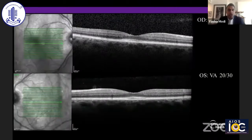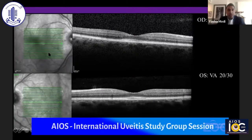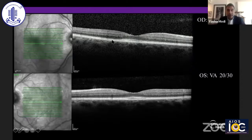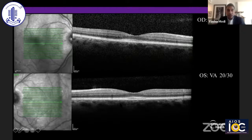When she comes to see us, she has this shadowing appearance on the near infrared reflectance, which almost looks like floaters and corresponds to her vitreitis. And then on the OCT, she has this sort of enlargement or focal thickening of the interdigitation zone. It almost looks like there's a dome elevation where the ellipsoid zone comes up.